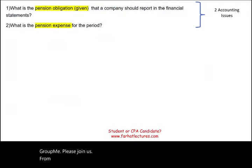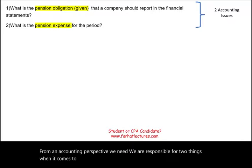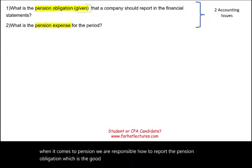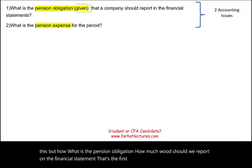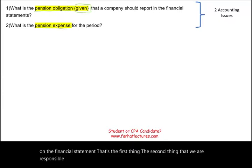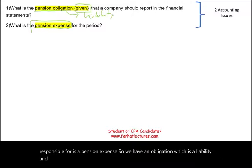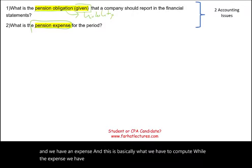From an accounting perspective, we are responsible for two things when it comes to pension. First, we are responsible for how to report the pension obligation — which is given to us; we don't have to compute it. Second, we are responsible for the pension expense. So we have an obligation, which is a liability, and we have an expense, and this is what we have to compute.